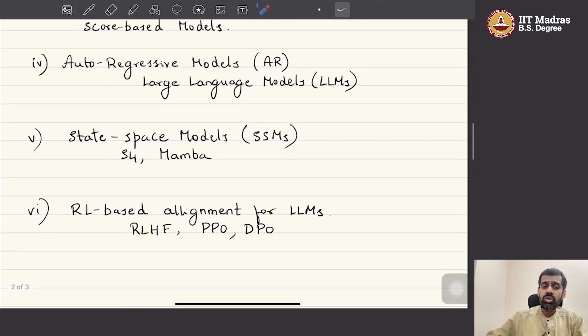Then, we will move on to another class of models, generative models called State Space Models, SSM. The examples for these models are S4 and Mamba and so on. These are an upcoming family of generative models that are an alternative to the Auto-Regressive Language Models.